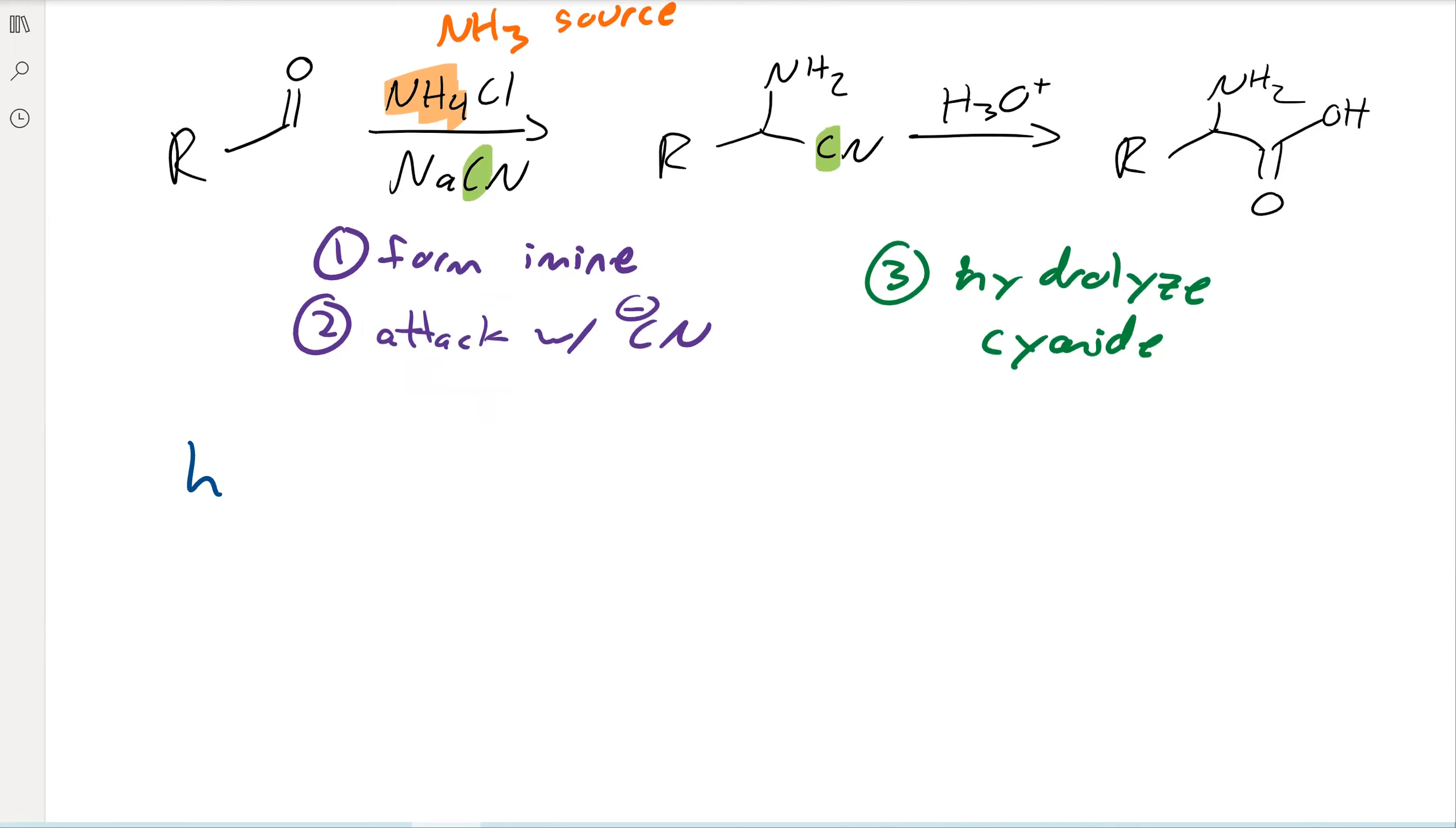So again here, what do you have at the beginning? We have the R group already, it's just hidden as an aldehyde. Then what we're adding is the carboxylic acid through that cyanide that then gets hydrolyzed, and the amine.